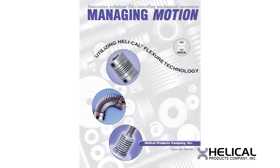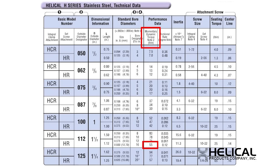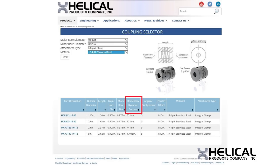If you are finding a part number using our catalog or coupling selector, you will see a performance spec we call momentary dynamic torque. For example, if you found HCR 112-16-12, you would see the momentary dynamic torque rating is 55 pound inches.